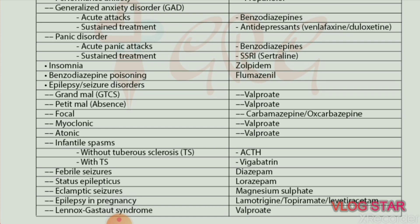Epilepsy and seizure disorders. Grand mal seizures — drug of choice is valproate. Petit mal — drug of choice is valproate. Focal seizures — drug of choice is carbamazepine or oxcarbazepine. Myoclonic seizures — drug of choice is valproate. Atonic seizures — drug of choice is valproate. Infantile spasm without tuberous sclerosis — drug of choice is ACTH.